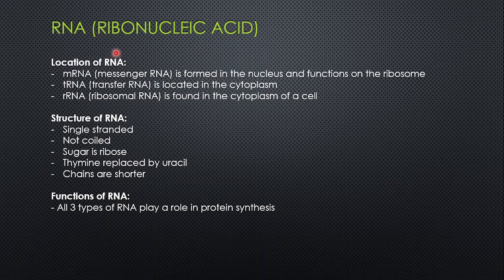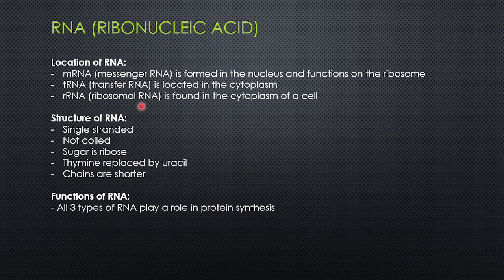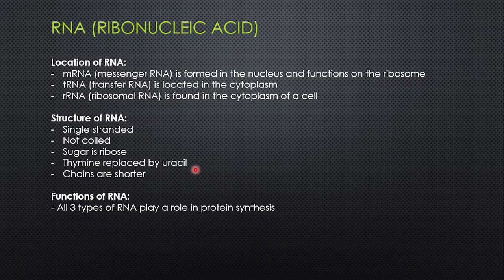RNA is ribonucleic acid. There are three types: messenger RNA (mRNA), which is in the nucleus and flows out through the nuclear pores into the cytoplasm; transfer RNA (tRNA), which is in the cytoplasm; and ribosomal RNA (rRNA), also in the cytoplasm. The structure of RNA: it is single-stranded and not coiled. The sugar used is ribose sugar. Thymine is replaced by uracil, but the other three nitrogenous bases — cytosine, guanine, and adenine — are still present. RNA chains are shorter than in DNA.